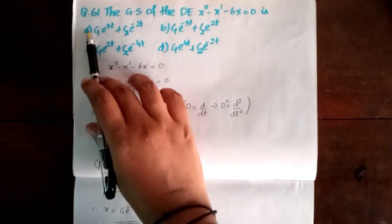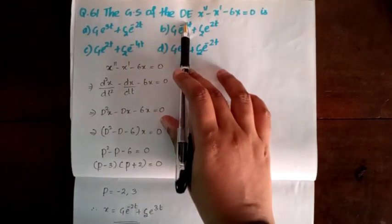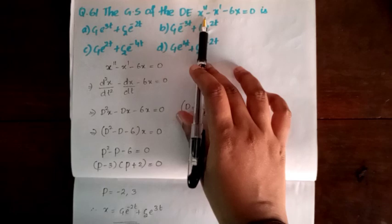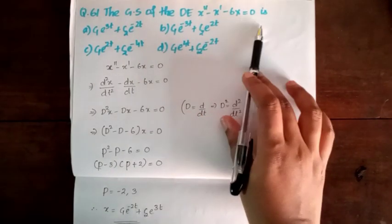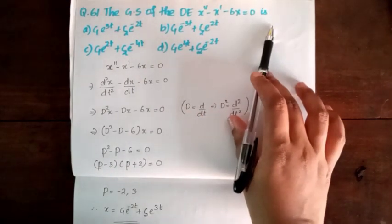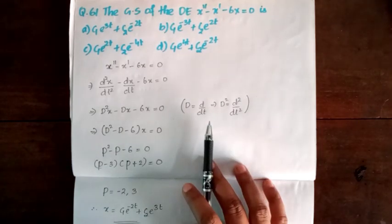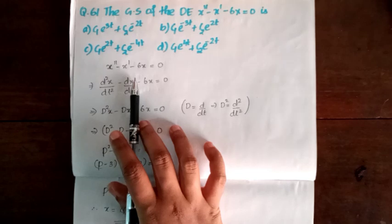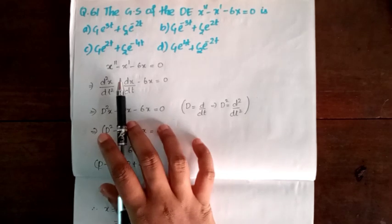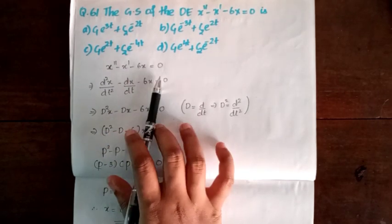Question 61. The general solution of the differential equation x double prime minus x prime minus 6x equal to 0. This differential equation is a general solution. So, x double prime minus x prime minus 6x equal to 0.